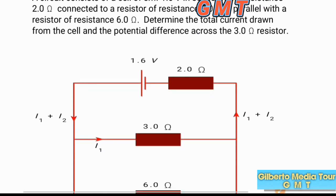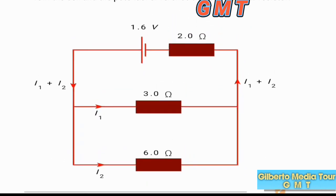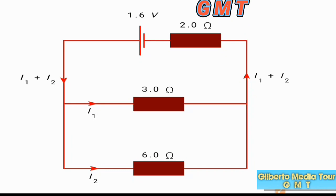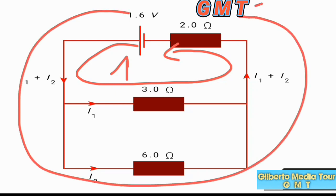Using Kirchhoff's second law, we can use what we call loops. There are two loops here that will help us solve the question. Loop number one covers the cell and the 3-ohm branch, and loop number two is the outer loop covering the entire circuit.